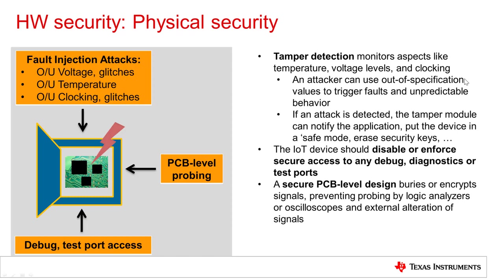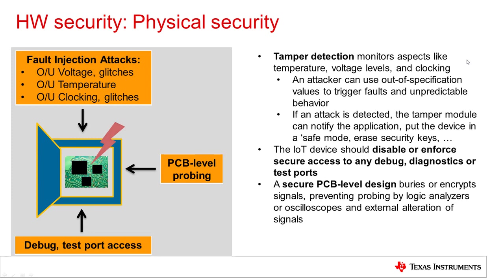One of these is called tamper detection. Microcontrollers have specified operating temperature ranges, voltages, and clock speeds. An attacker may try to use out-of-specification values — such as running the chip too slow, at too low a voltage, or at too high a temperature — hoping to trigger some type of fault and unpredictable behavior that allows them to compromise the device and access security keys. The purpose of tamper detection is to monitor temperature, voltage levels, and clocking speeds, and if these are being pushed to out-of-spec values, it can take appropriate action such as notifying the application, erasing security keys, or shutting the device down.